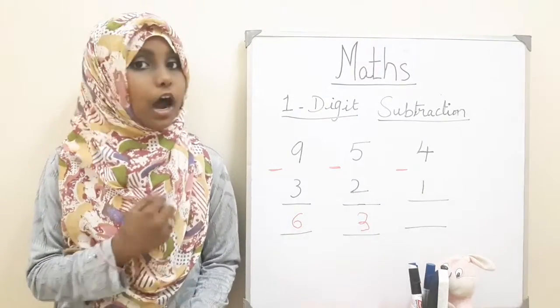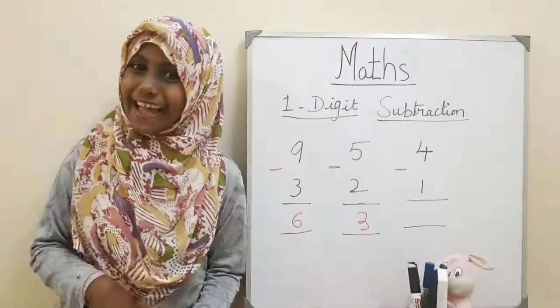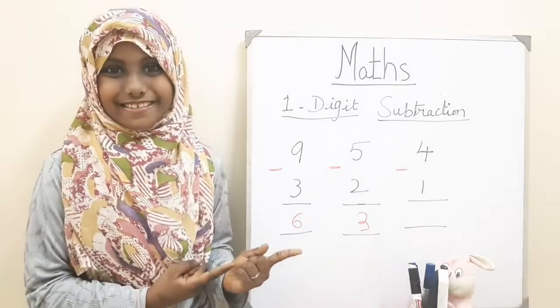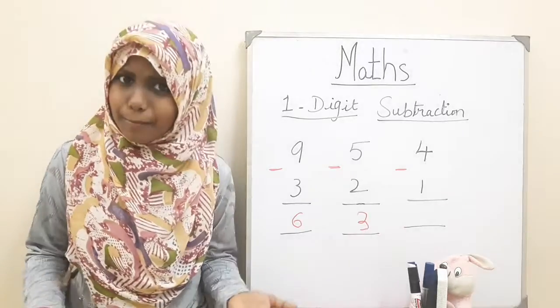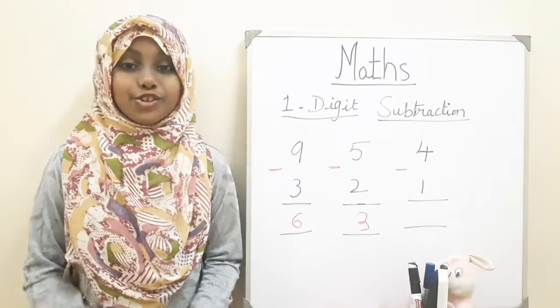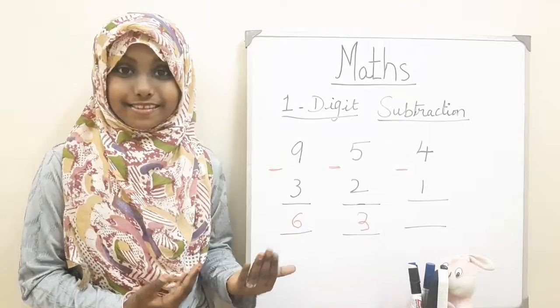So she needs to count how many pens are left with her. Come on guys, let's count with Daisy. Four minus one, four minus one equals three. So three is the answer.